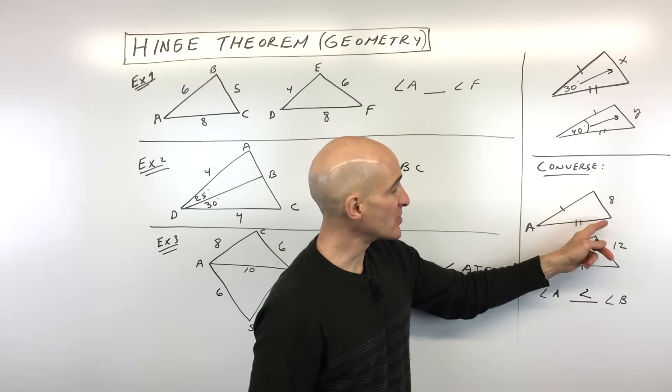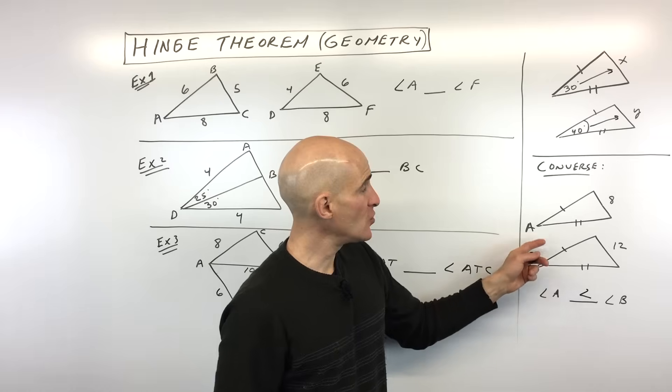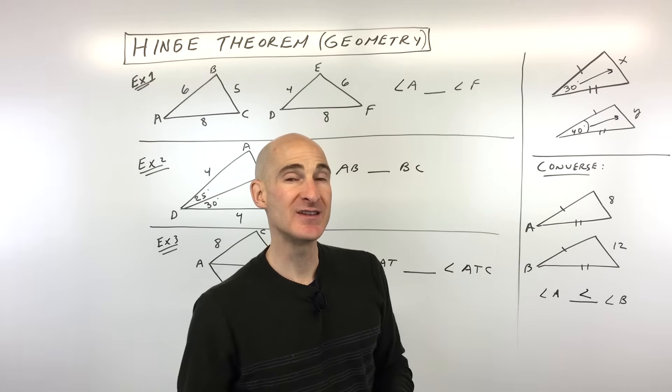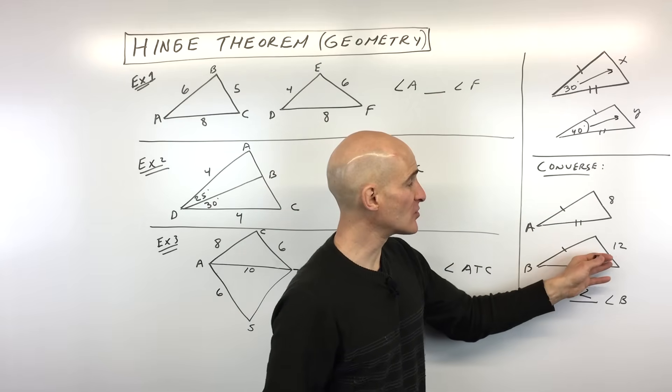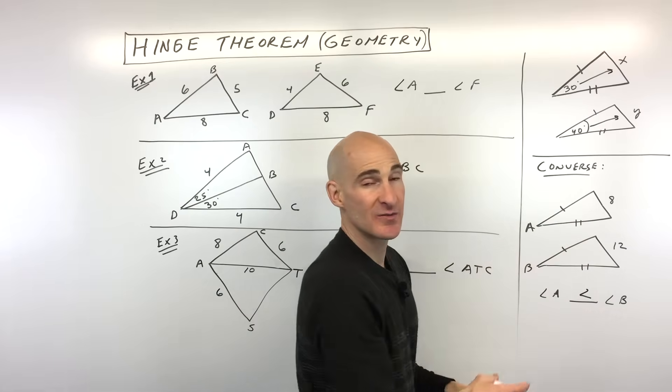Now what happens if these were exactly the same? Let's say they were both 8 or both 12. Then the two angles would be congruent, and you probably remember this from when you learned about congruent triangles. That would be the side-side-side triangle congruence theorem, meaning that if three sides are congruent to three sides, everything in those triangles is going to be exactly the same.